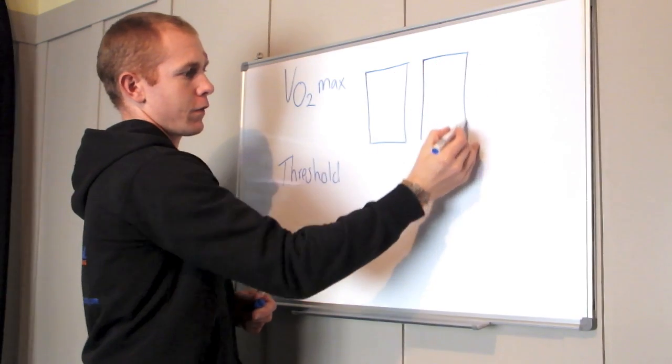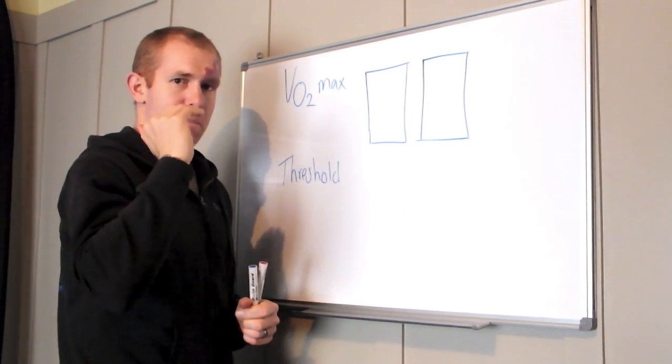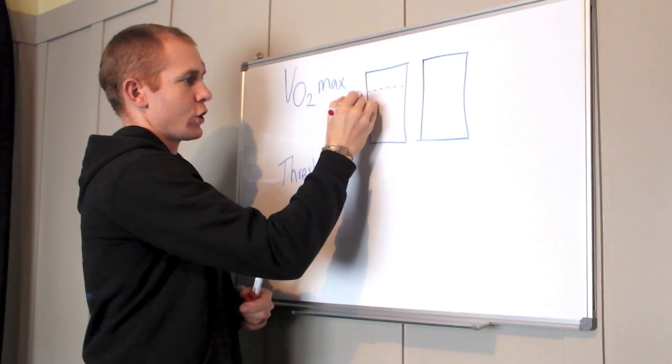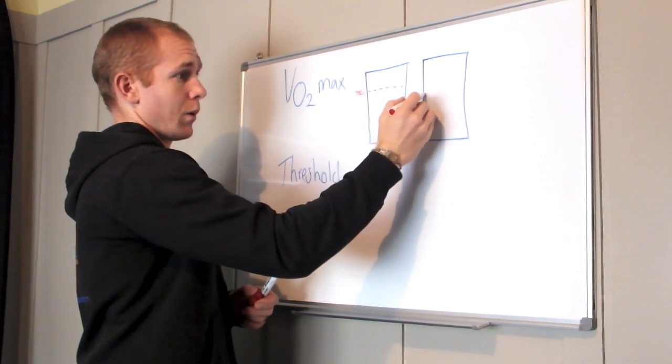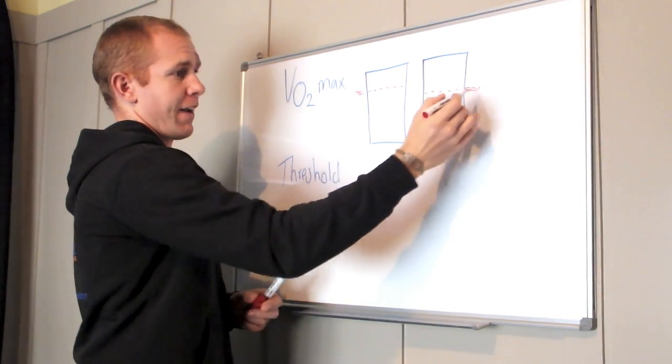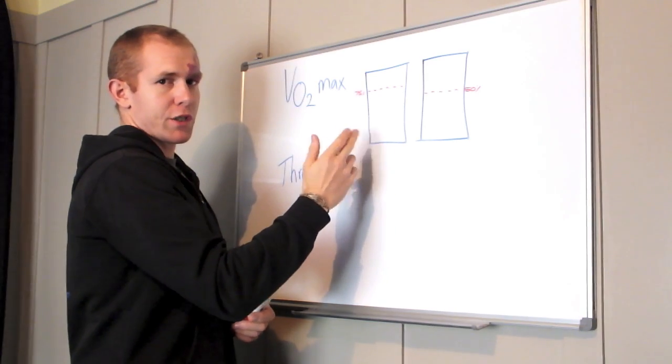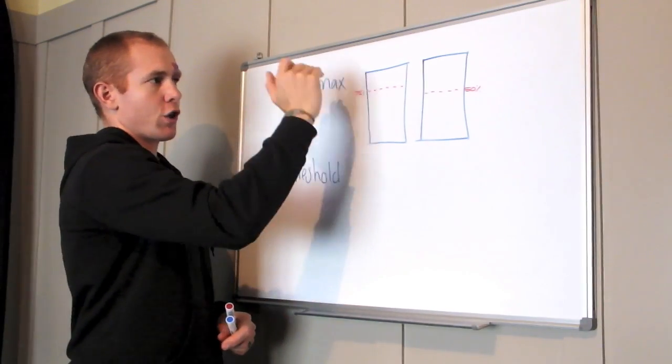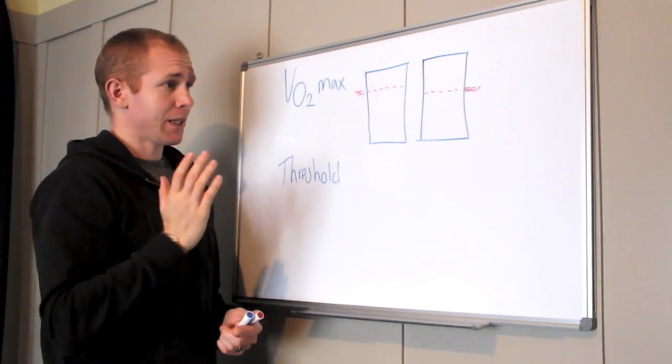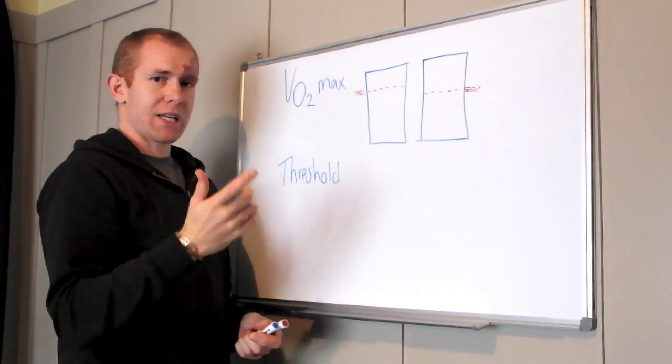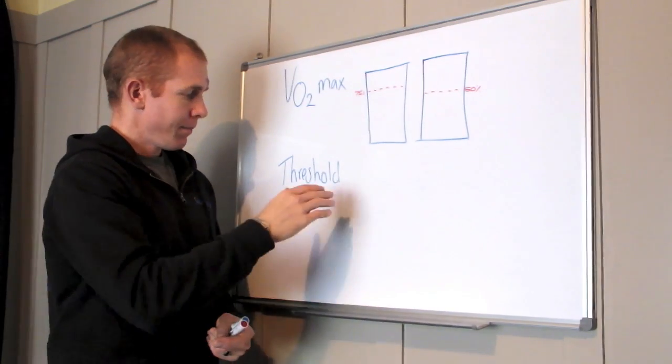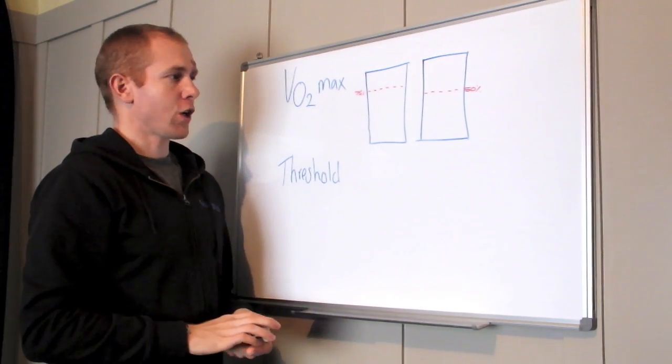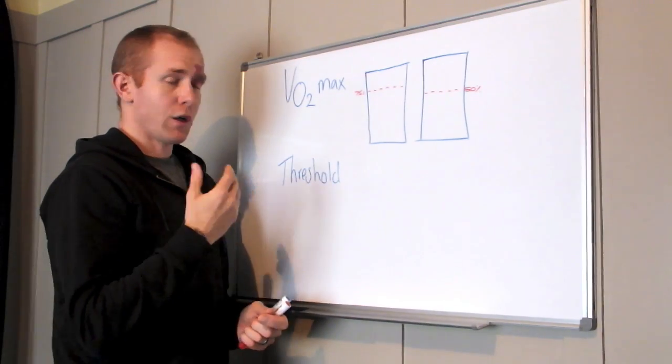So you could have two people for example with the same VO2 max, the same VO2 max. This person here may be able to operate their engine at 75 percent of their max, while this person here may be only able to operate at 50 percent. On race day this person's going to be faster. This percentage here is your anaerobic threshold. It's the proportion of your max that you can use functionally and sustainably to exercise at.